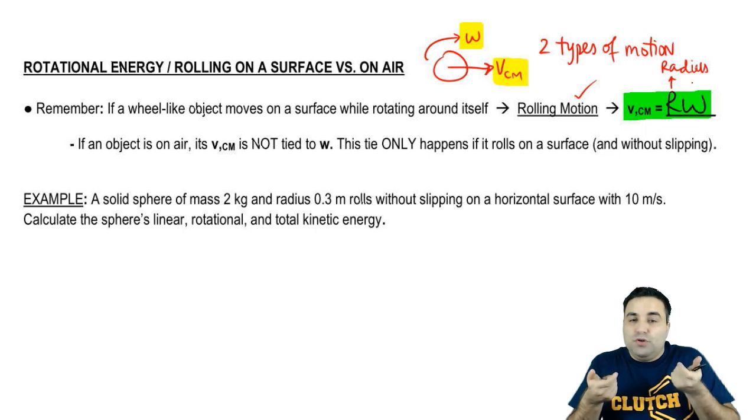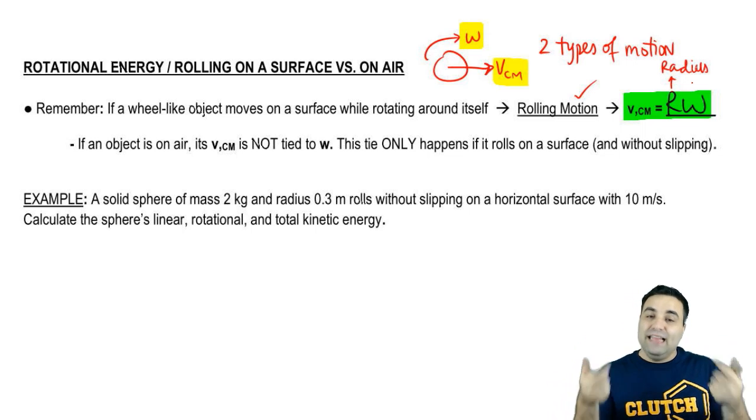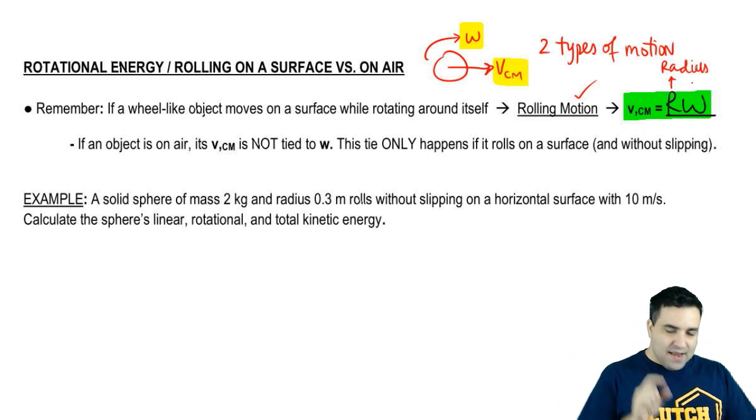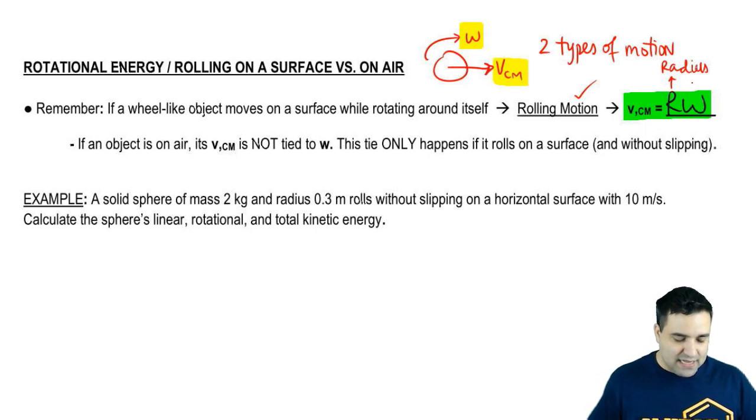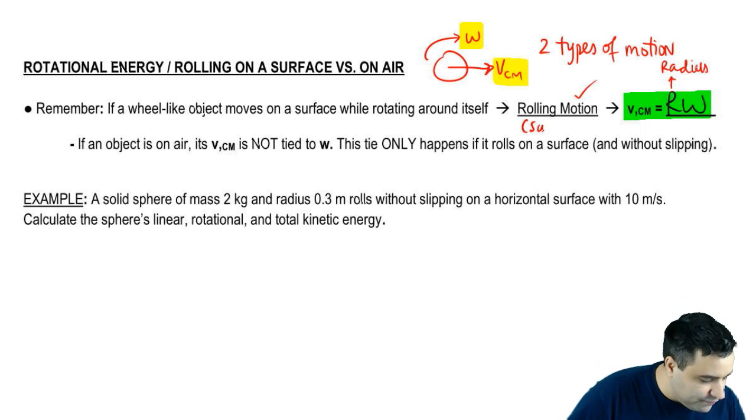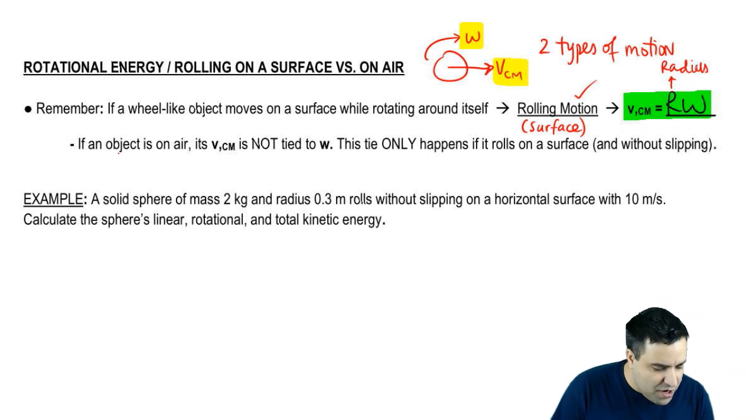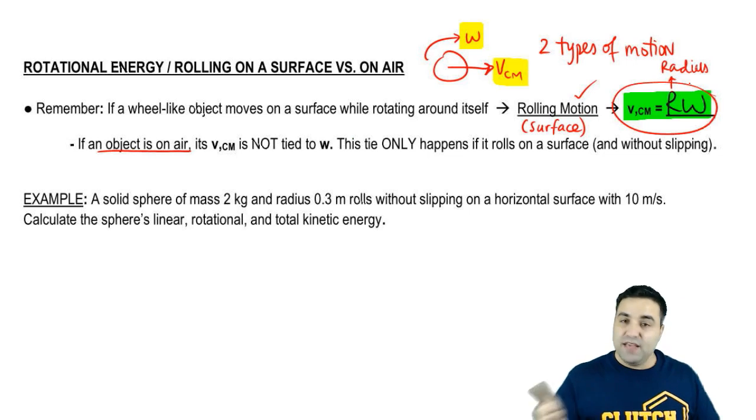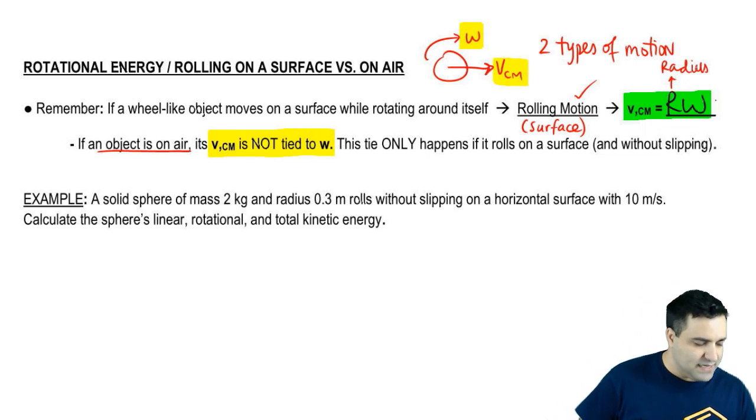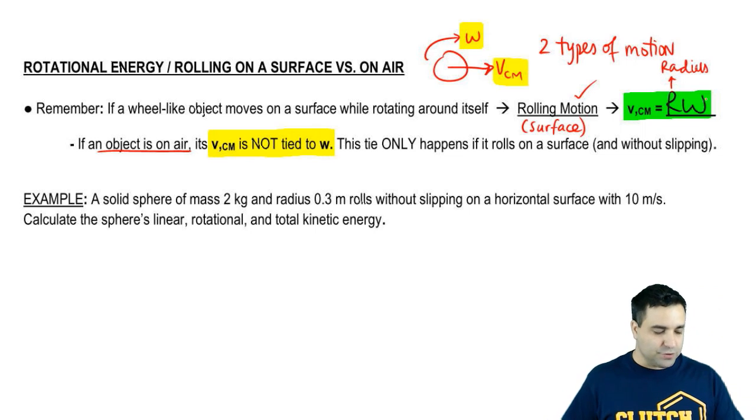What that means is that those two variables, V and omega, are linked. So if one grows, the other one has to grow by the same amount. Now it's important to make a distinction that if you have an object, this only happens if you are on a surface. If you have an object that is rolling on air, these two variables, V and omega, are not tied to each other. They are not tied, V_cm is not tied to omega. So basically it means that you cannot use this equation right here, the green equation.